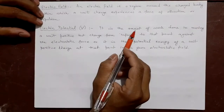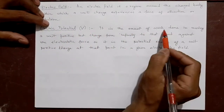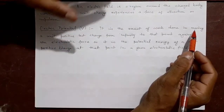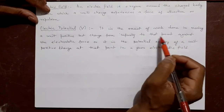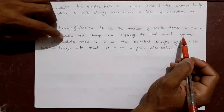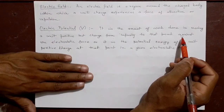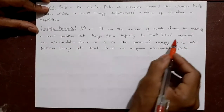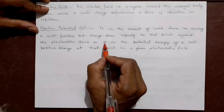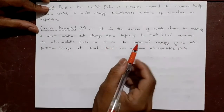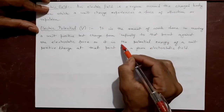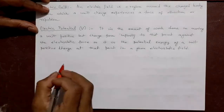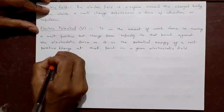Electric potential is the amount of work done in moving a unit positive test charge from infinity to that point against the electrostatic force. At that particular point when you bring the charge you are pushed away, so you have to overcome that force. In another way, it is the potential energy of a unit positive charge at that point in a given electrostatic field.